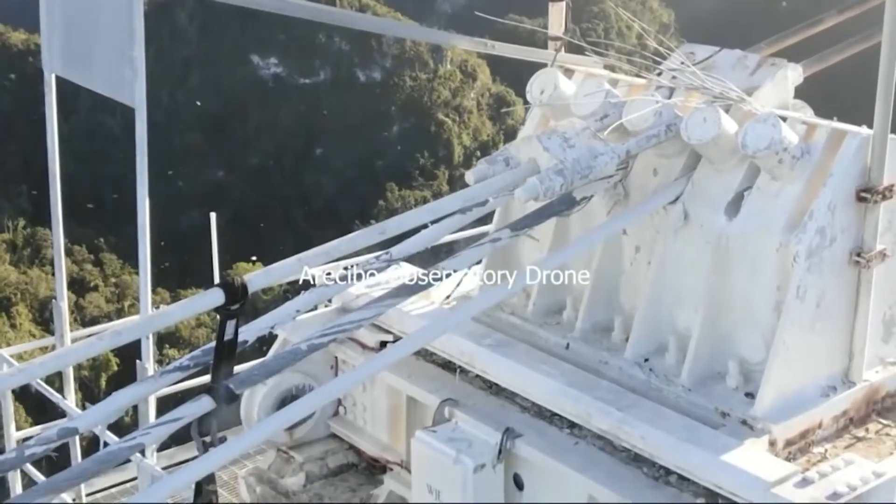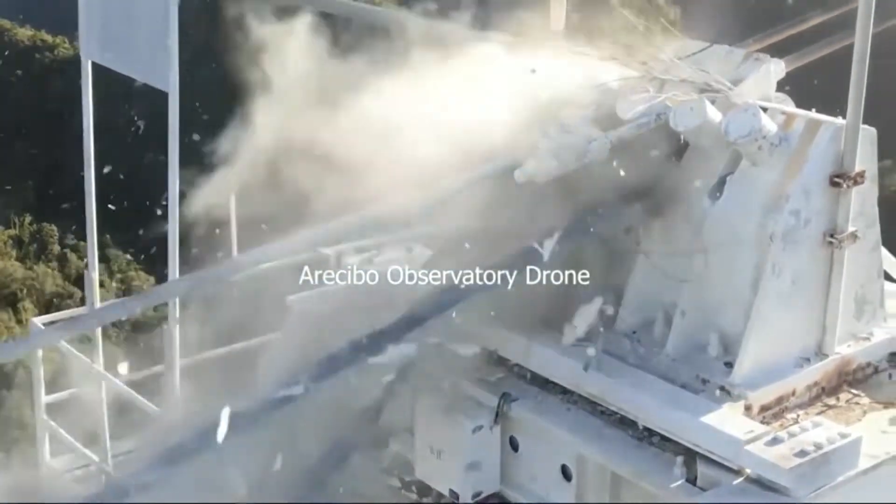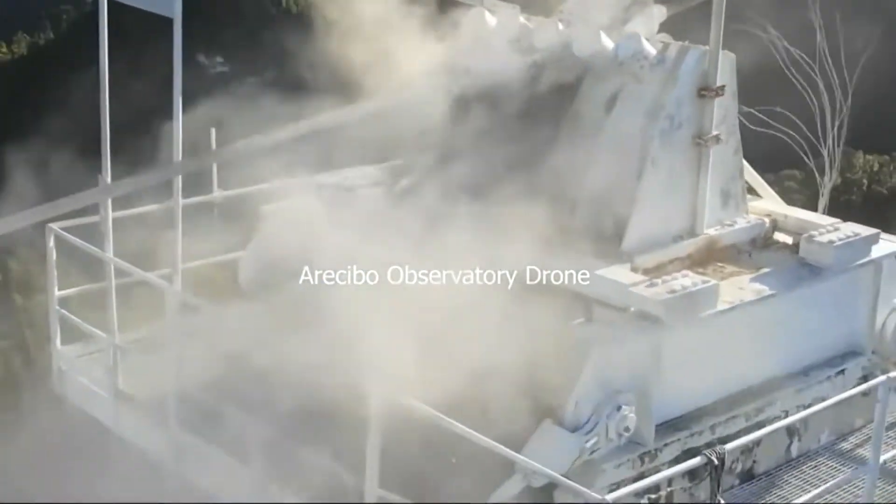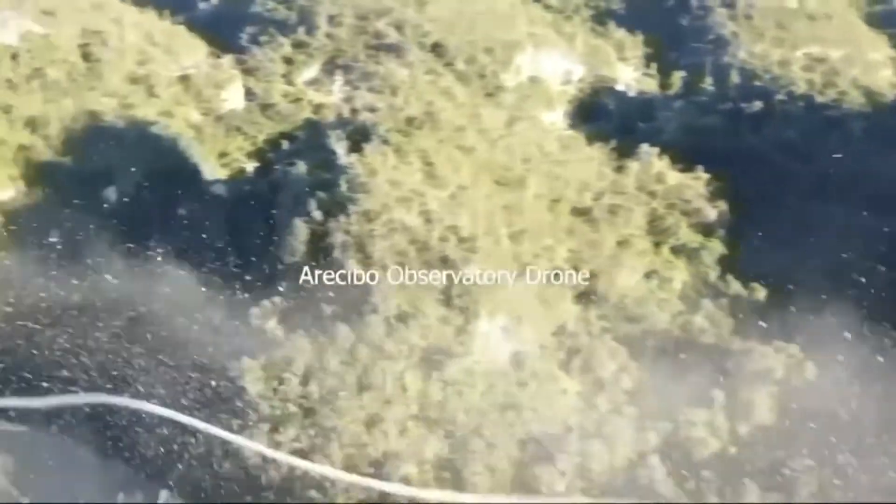Unfortunately, in December of 2020, the 300-meter Arecibo Observatory in Puerto Rico had a devastating failure, where the support cables snapped after being damaged by a hurricane, destroying the observatory.